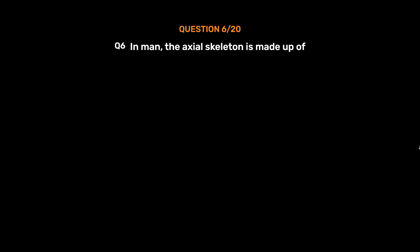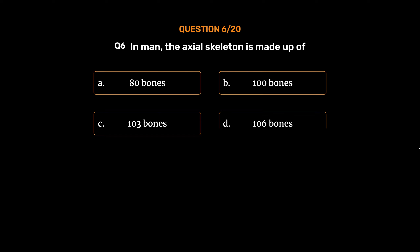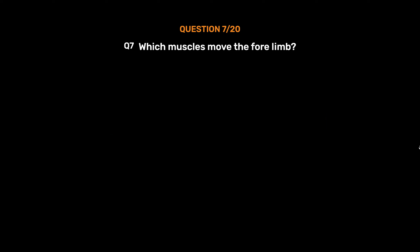Question No. 6. In man, the axial skeleton is made up of: Option A. 80 bones, Option B. 100 bones, Option C. 103 bones, Option D. 106 bones. The correct answer is Option A, 80 bones.